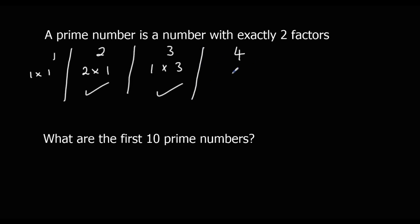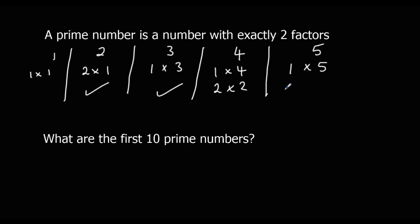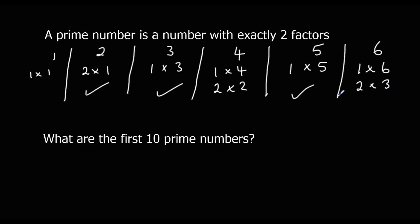4: I can make 4 by doing 1 times 4 or 2 times 2, so it has 3 factors — it is not a prime number. 5: I can do 1 times 5 and nothing else, so it has 2 factors — it's a prime number. 6: I can do 1 times 6 or 2 times 3, so it has 4 factors — it's not a prime number.